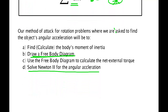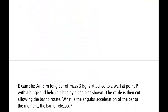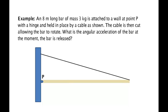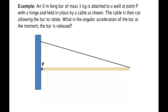An eight-meter long bar of mass three kilograms is attached to a wall at point P with a hinge. It's held in place by a cable. The cable is then cut, and this bar is going to begin to rotate. They want to know the angular acceleration of the bar. The first step is to draw a free body diagram.